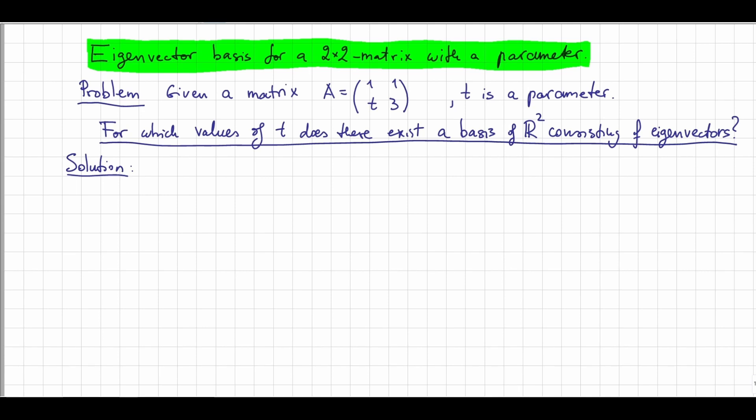More specifically, let us say we are given a matrix A, which is a 2x2 matrix: (1, 1; t, 3), where t is a parameter. And the question is, for which values of the parameter t does there exist a basis of R² consisting of eigenvectors?